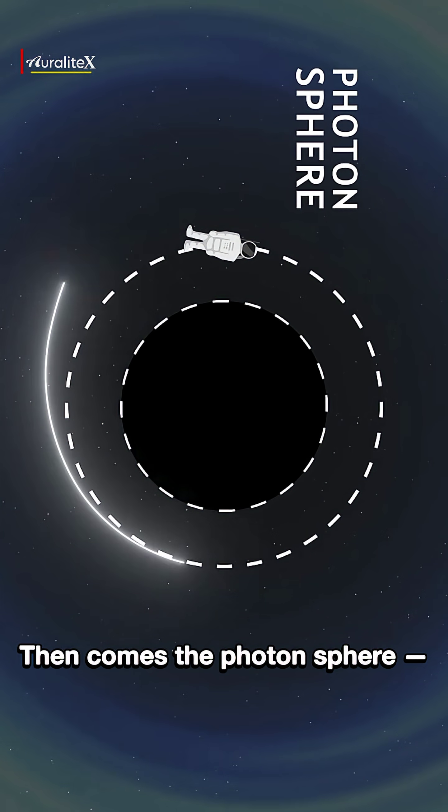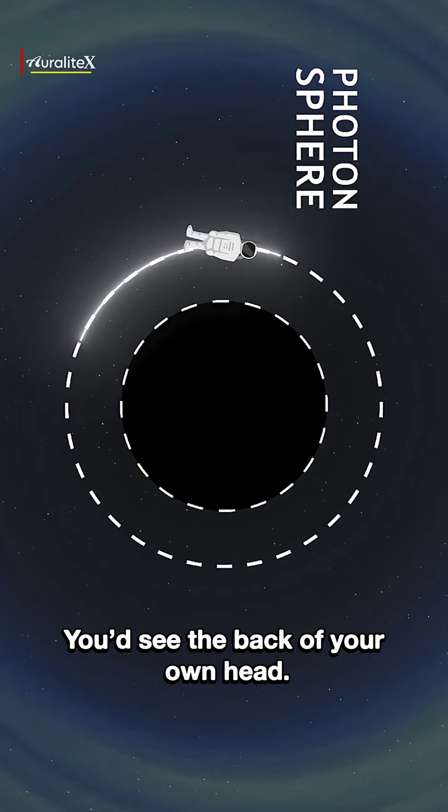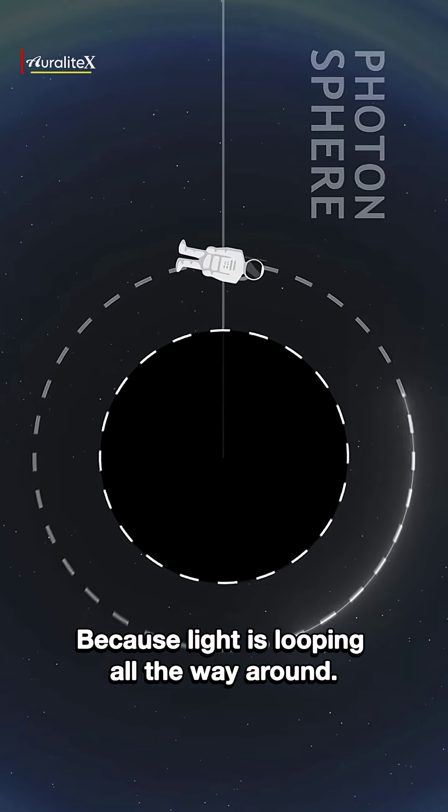Then comes the photon sphere, a glowing ring where light orbits the black hole like a satellite. You'd see the back of your own head, literally, because light is looping all the way around.